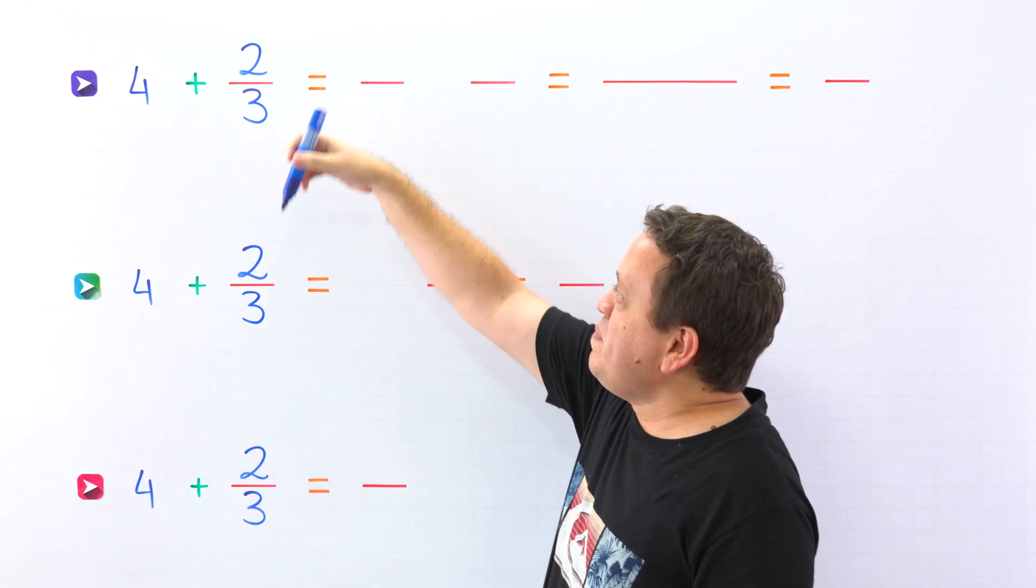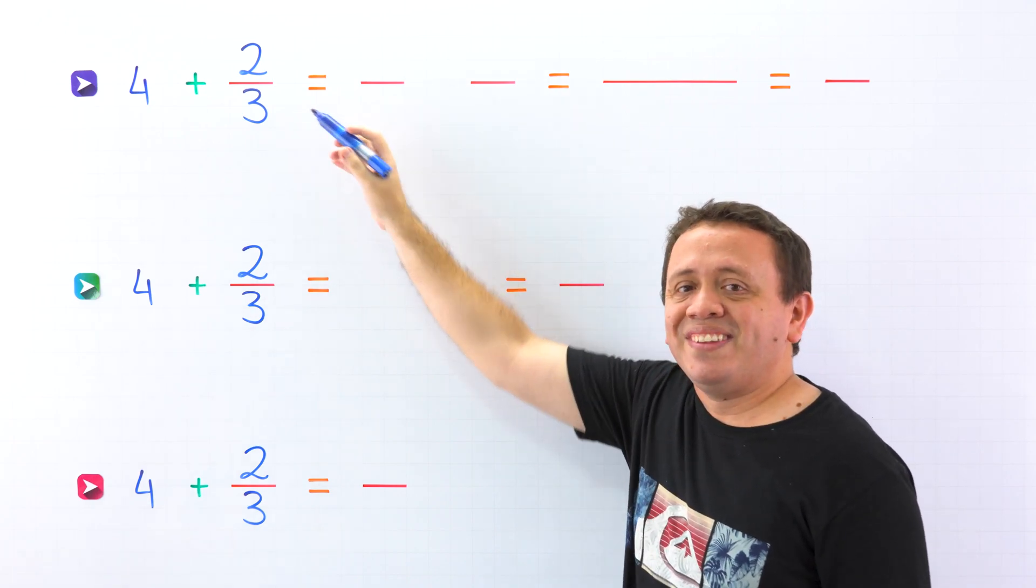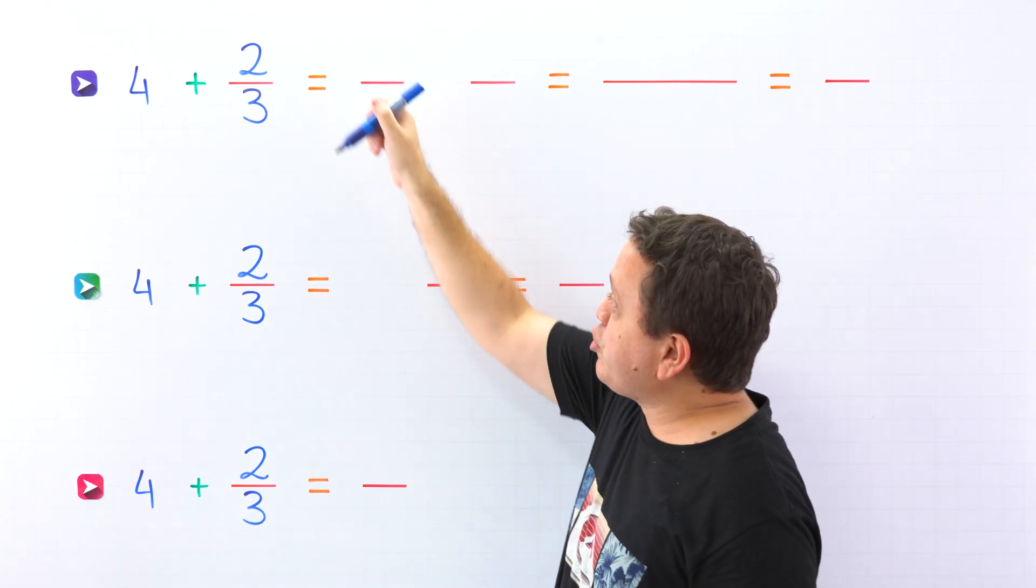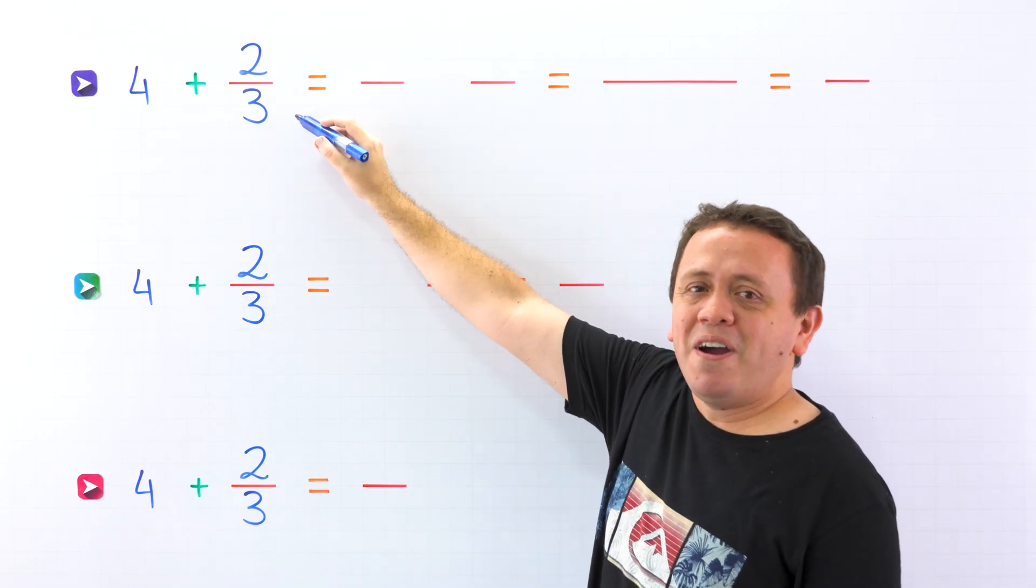In a fraction, like this one, the top number is the numerator, and the bottom number is the denominator.